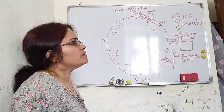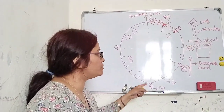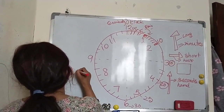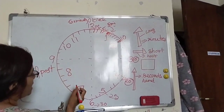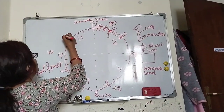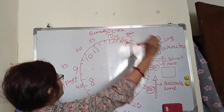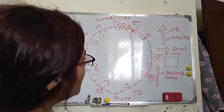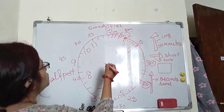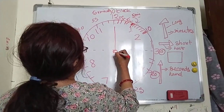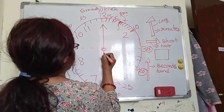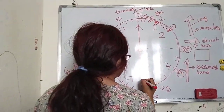Now, in your book, your teacher already taught you o'clock and half past. Half past means six — when the long hand is at six, that is half past. Now I will show you six o'clock. Long hand should be at twelve, and six o'clock means the small hand should be at six.